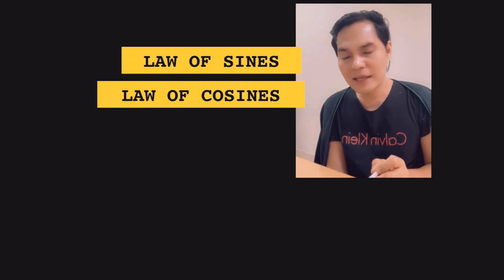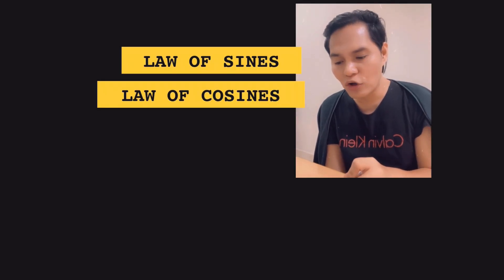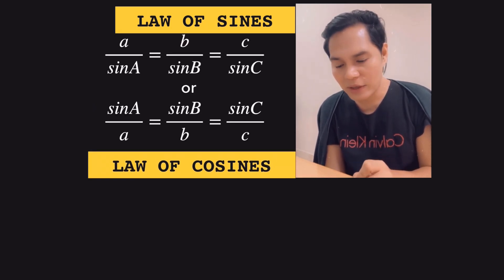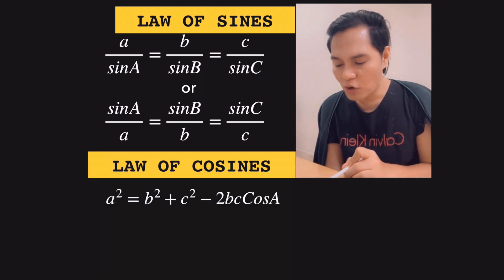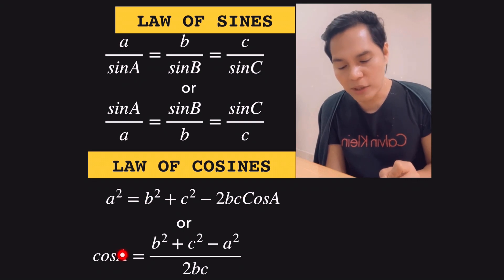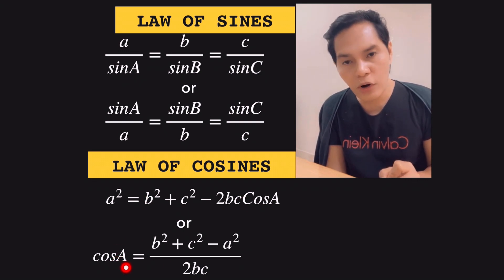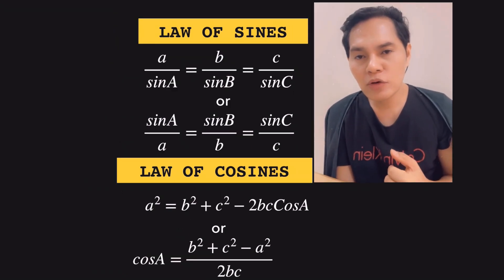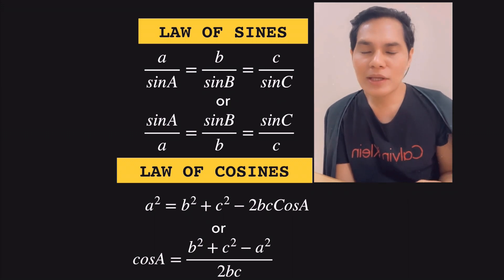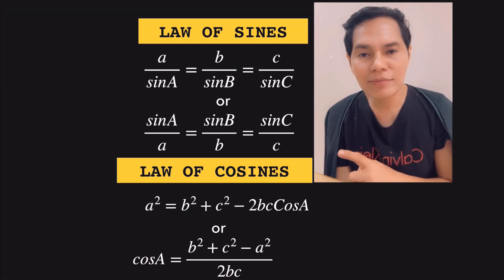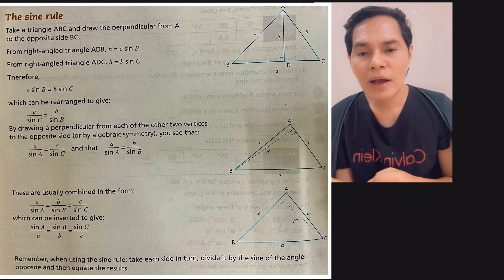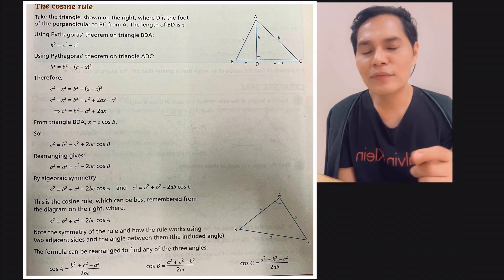Before giving examples, let's get to know first the formula of the law of sines and cosines. For the law of sines, this is actually invertible. For the law of cosines, it depends: if you are looking for the side, you use one formula; if you are looking for the angle, there is a corresponding formula. You can search these formulas on the internet or check your textbook — and I'll also be uploading a video on how to derive them.